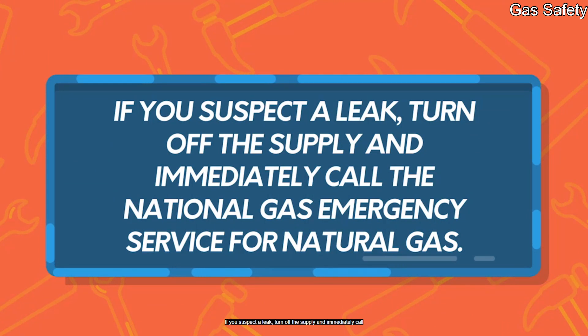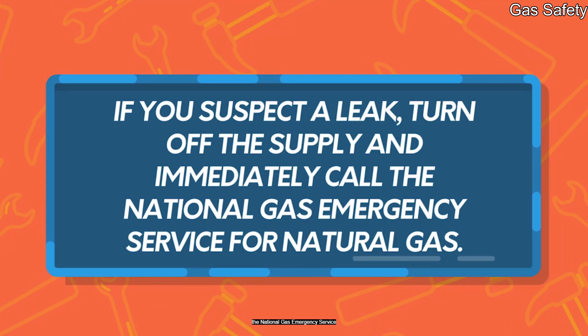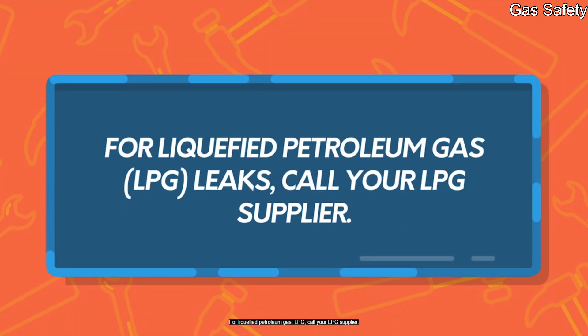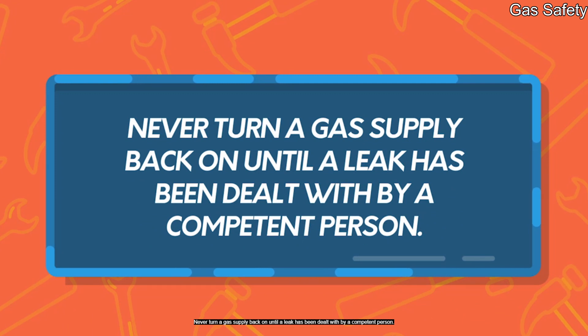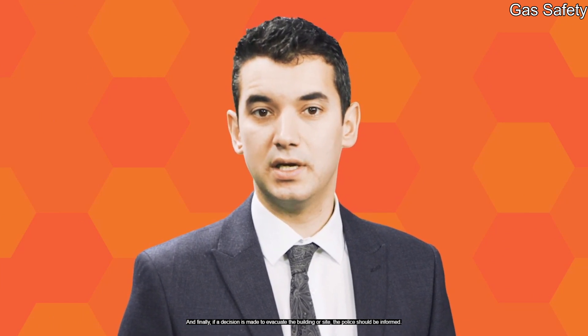If gas appliances such as ovens, cookers and boilers are not correctly installed and maintained, there is a danger of fire, explosion, gas leaks and carbon monoxide (CO) poisoning. This work can only be carried out by a qualified person who is Gas Safe registered, regardless of the type of property involved. It is illegal for an unregistered person to carry out any work on any gas appliance. If you suspect a leak, turn off the supply and immediately call the National Gas Emergency Service. For liquefied petroleum gas (LPG), call your LPG supplier. Never turn a gas supply back on until a leak has been dealt with by a competent person. If a decision is made to evacuate the building or site, the police should be informed.